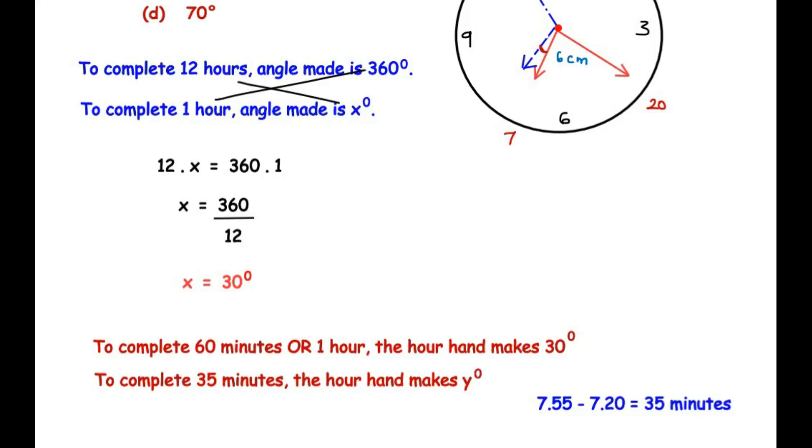Now here again, cross multiplication. Instead of one hour, we are going to represent it in minutes, so 60 minutes times y degrees. 60 minutes will multiply with y degrees and 35 minutes will multiply with 30 degrees. So we have here 60 times y is equal to 35 times 30.